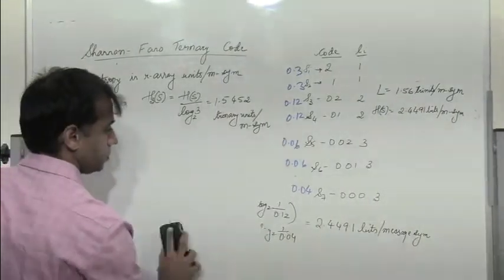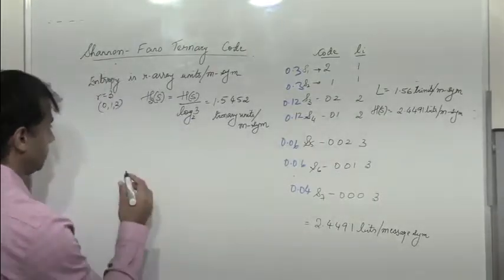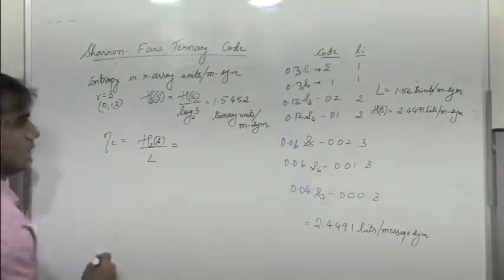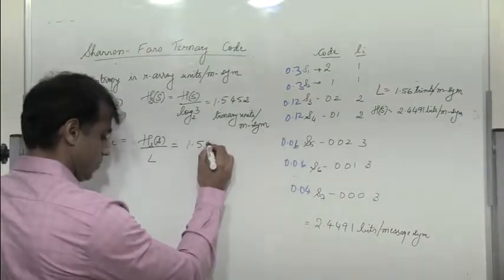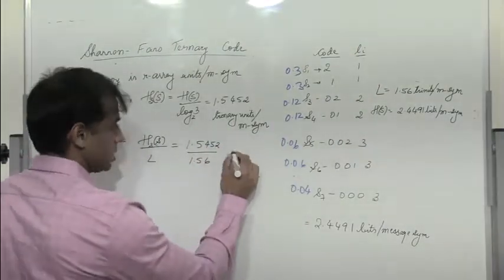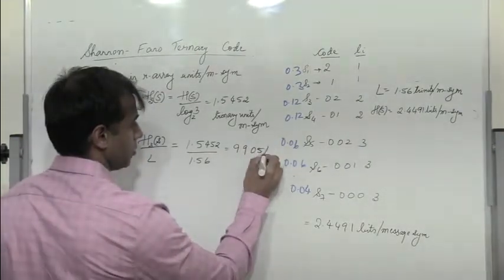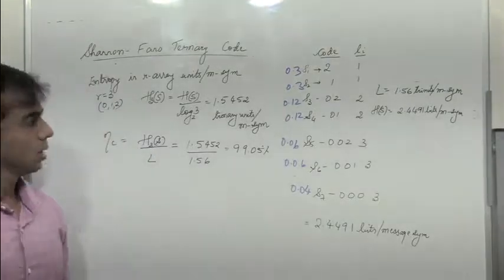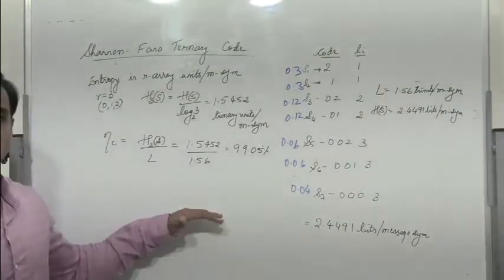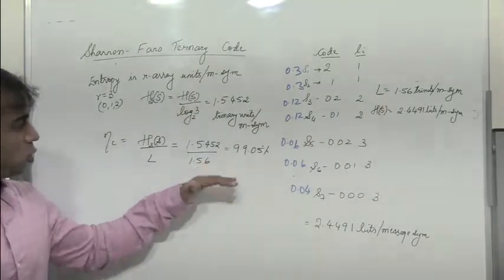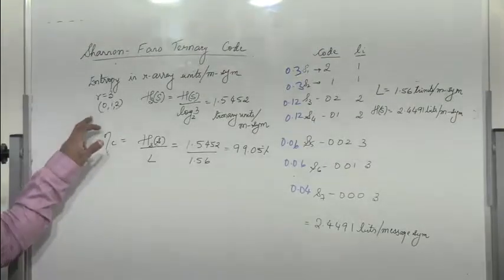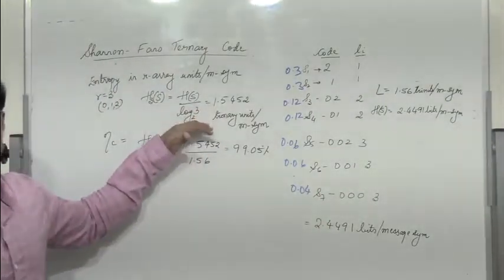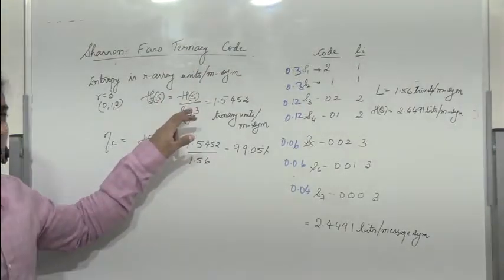Now let's find the efficiency. The efficiency of the code is H₃(S) divided by the average length L: 1.5452 / 1.56 ≈ 99.05%. The key differences from binary: in ternary we divide into three groups assigning 2, 1, and 0; and for entropy, we compute H(S) in bits then divide by log₂(R) — so for trinary, divide by log₂(3).